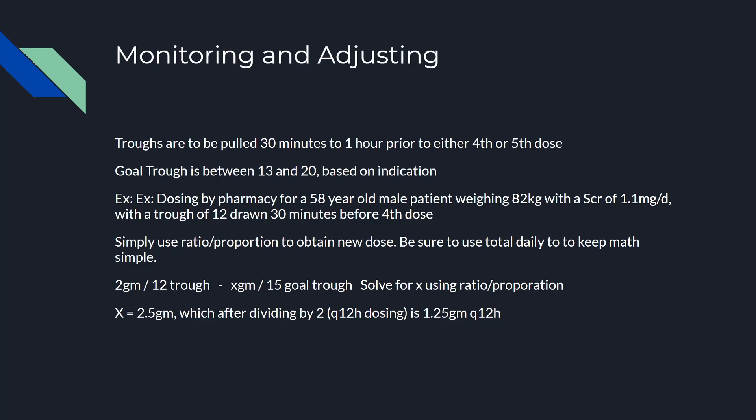For this patient example, they ended up with a trough of 12. We were shooting for 13 to 20, and they ended up at 12. It was a good trough — pulled at the correct time — so it's a little on the lower end. The man is young and his serum creatinine hadn't changed over the last four days; it's been sitting at 1.1. Let's go ahead and adjust the dose so we can get closer to that goal trough of 15.